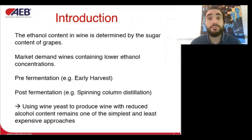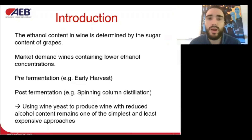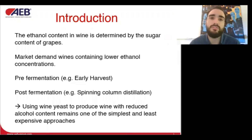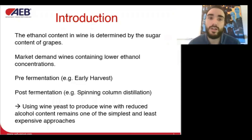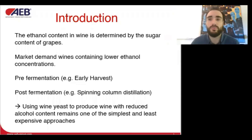The conversion of sugar to alcohol by yeast is the most essential reaction during winemaking, without which wine cannot be produced. The final ethanol content is determined by the initial sugar content in the grapes. Therefore, a moderate reduction can be achieved with earlier harvest grapes without impacting the final quality of the wine.